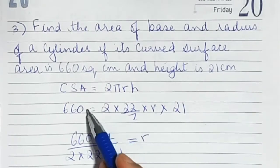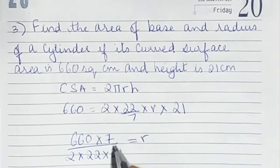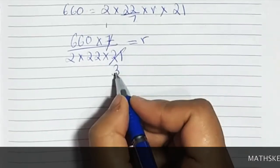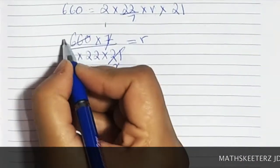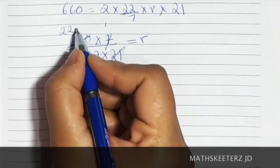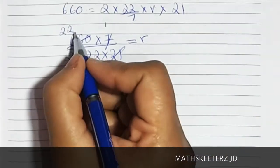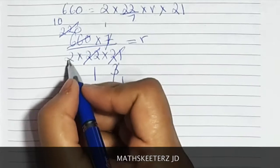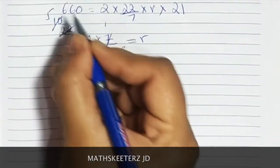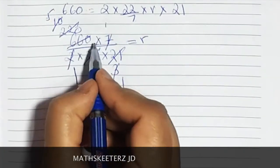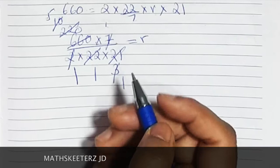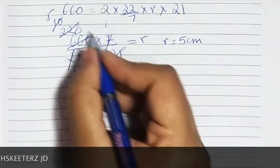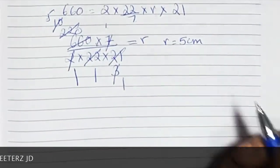Whatever was divided becomes multiplied and multiplied becomes divided. Working through the arithmetic: 660 × 7 divided by (2 × 22 × 21) gives r equal to 5 centimetres. This working confirms r is 5 centimetres.